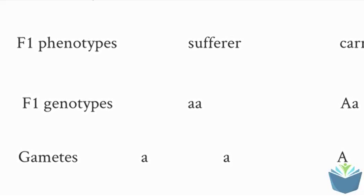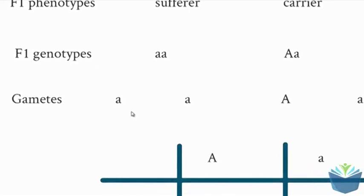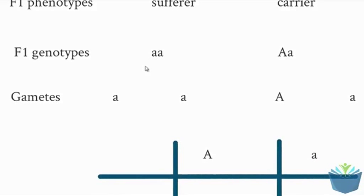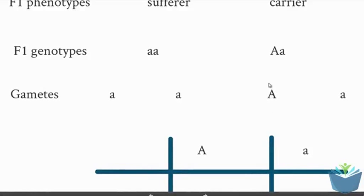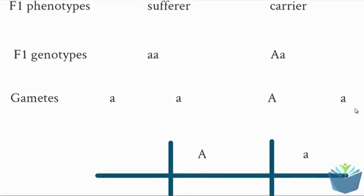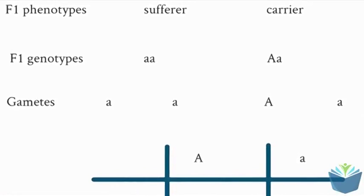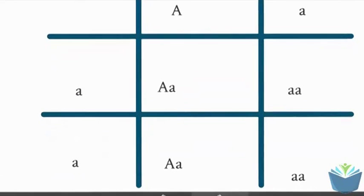The gametes in this instance will be, let's call this individual the male, all of the sperm are going to simply have the allele for albinism and in the carrier, half the eggs have the dominant healthy allele and half the eggs have the recessive albinism allele. So the Punnett square for this will look like this.